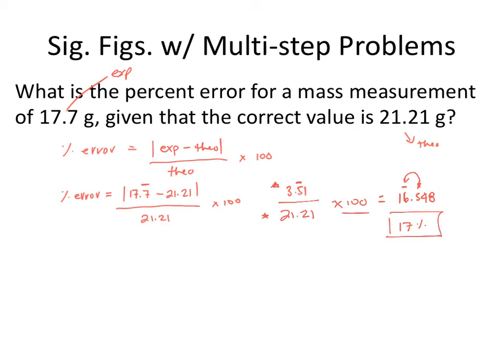Some of you may be asking why we're not using the 100 to determine sig figs. The 100 is just used to move the decimal — it has nothing to do with actual measurements, so significant digits are not considered in that particular number because it's not a measured value. This is how we do sig figs with multi-step problems: make sure you consider the significant figure rules for the different types of math happening within a single mathematical equation.